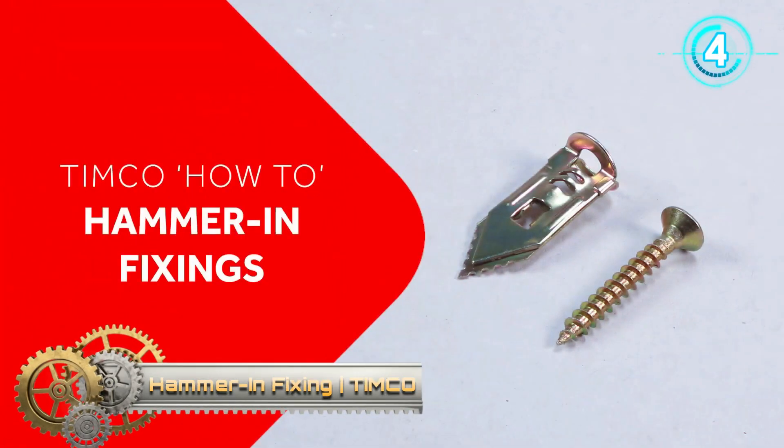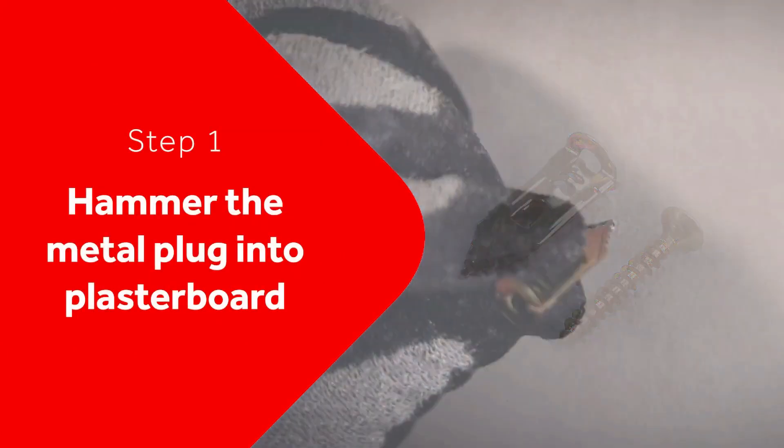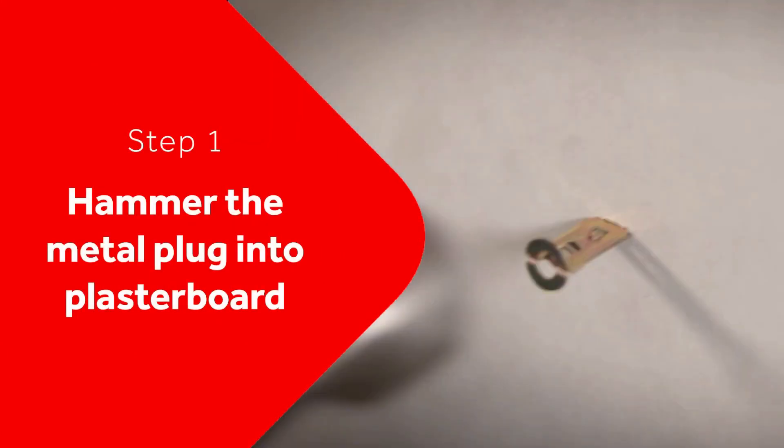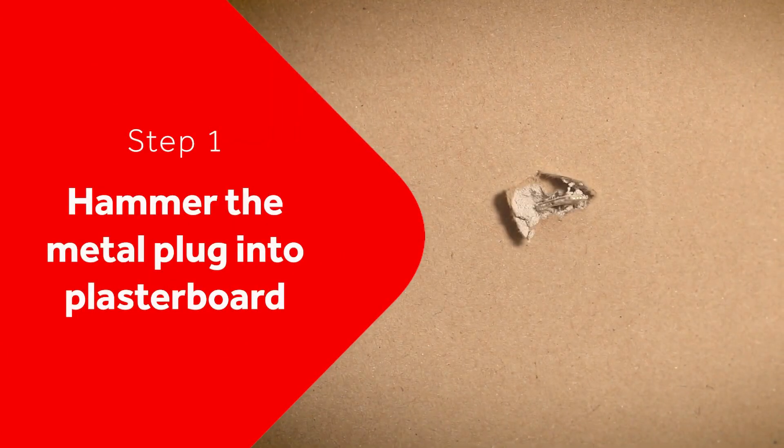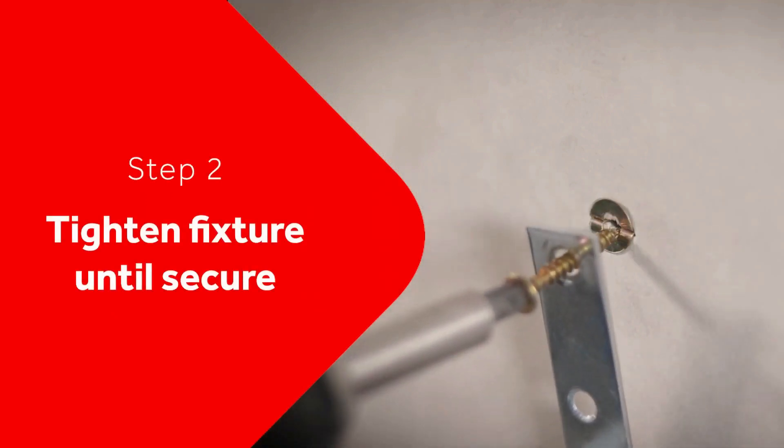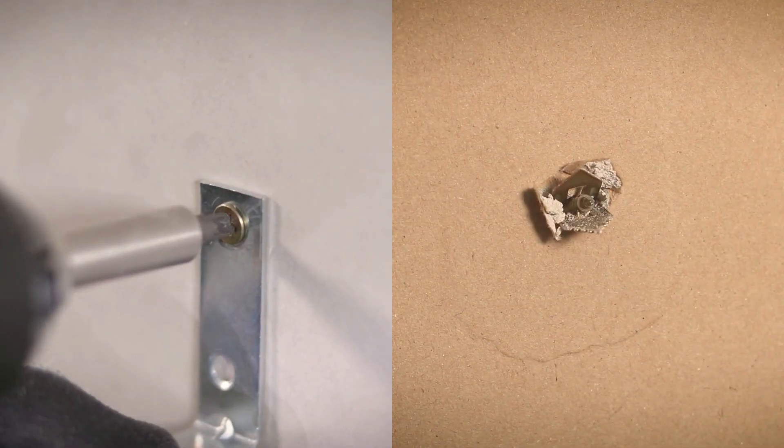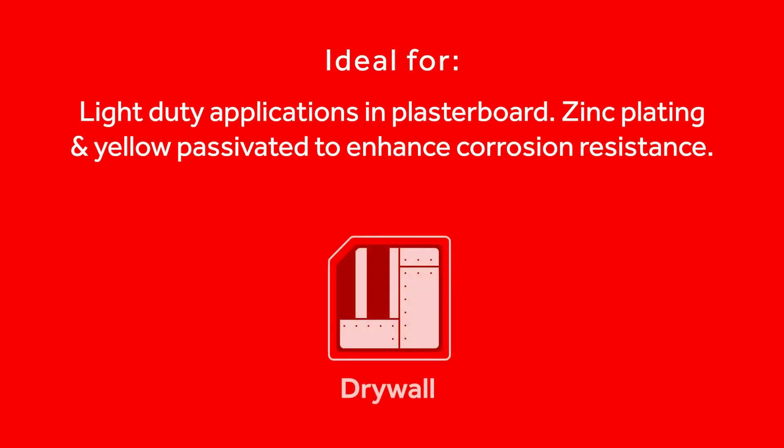Hammer-in fixing from Timco. A rapid light duty plasterboard fixing with zinc plating and yellow passivation to enhance corrosion resistance. Serrated point for easy hammering and quick installation. It comes complete with screws. Its steel material offers improved fire resistance compared to plastic or nylon fixings.